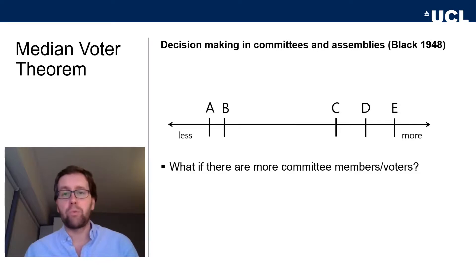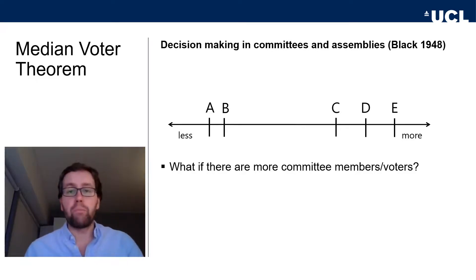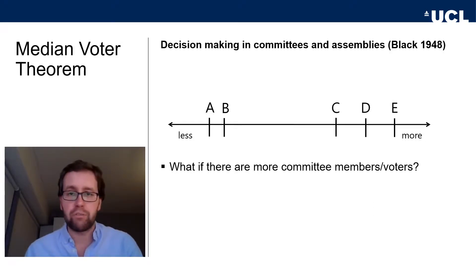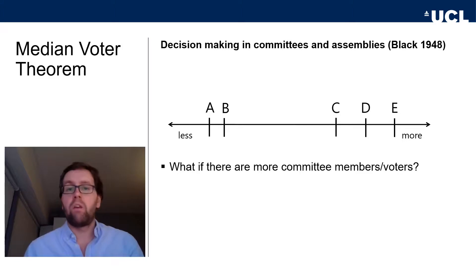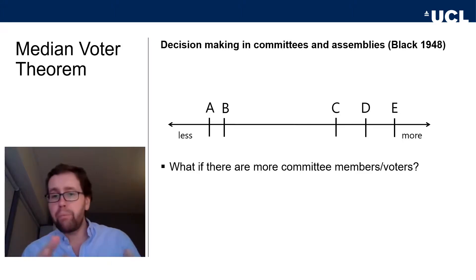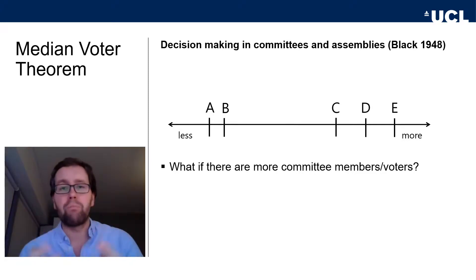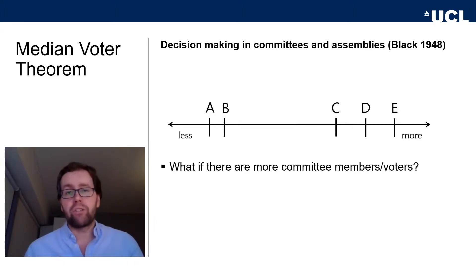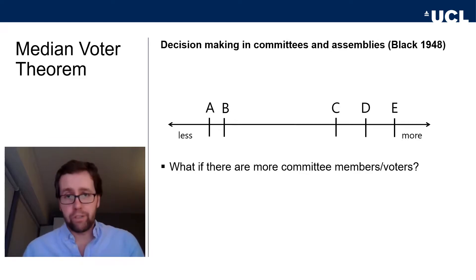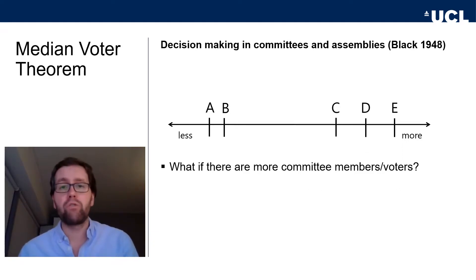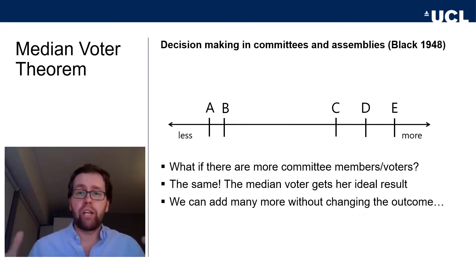Let's look at a second example with five voters: A, B, C, D, and E, distributed along some spending dimension rather than the minimum wage. This applies to all sorts of committees and decision-making situations. What would our prediction for the outcome be? If you picked C, you got it right. Sometimes students pick between B and C, something resembling the middle of the underlying dimension — but that's not right. What matters is the median voter's ideal point. The median voter is always the person who splits the group into equal halves. C has exactly two voters to the left and two to the right, so C is the median voter and C will get whatever she wants.